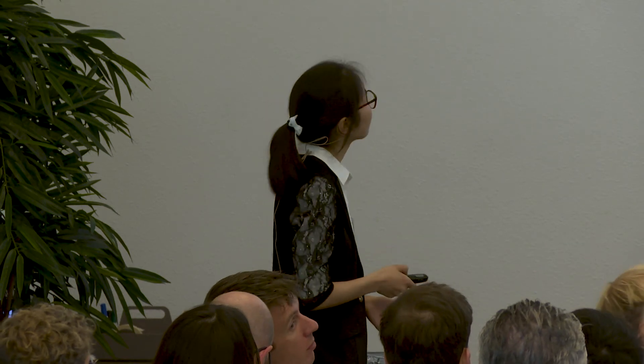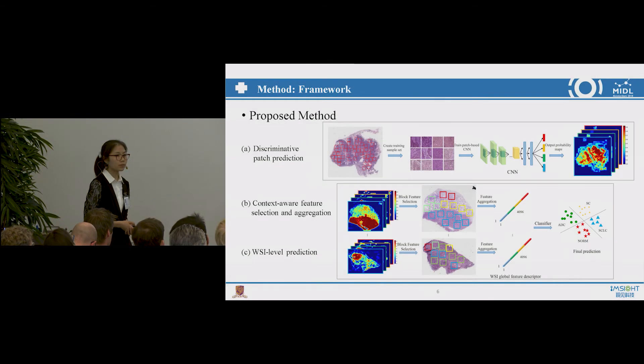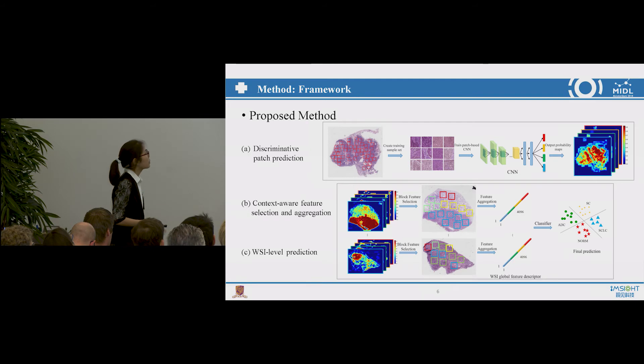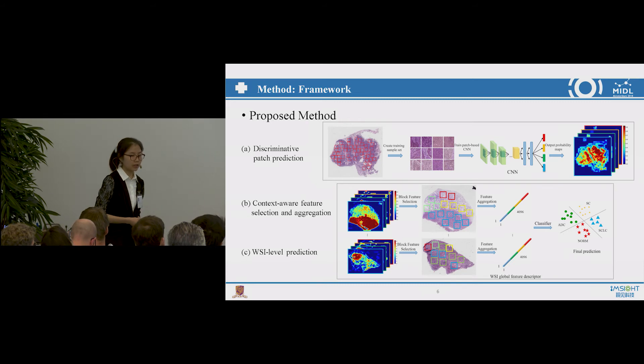Q: If I understand correctly, before your method goes to the weakly supervised part, you still need some labels to pre-train the model, right? A: No, our network parameters are readily initialized. Q: Can you go to the first slide of the overview of your model? So is the first stage — the patch prediction part — a kind of pre-training? A: We assign the image-level label to all the patches from the same whole slide image, so we didn't pre-train separately. Q: So you used the whole slide image label for all the patches? A: Yes.